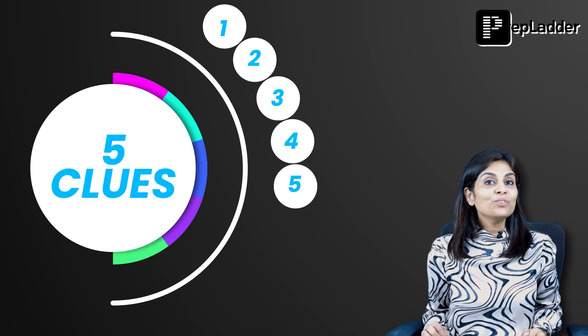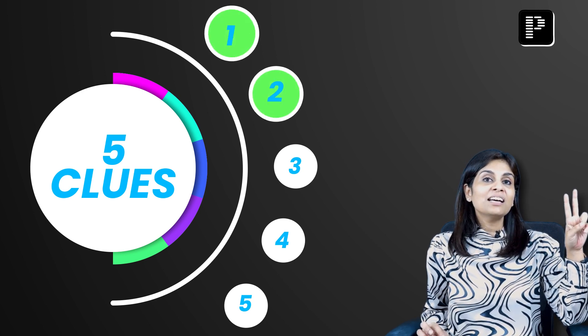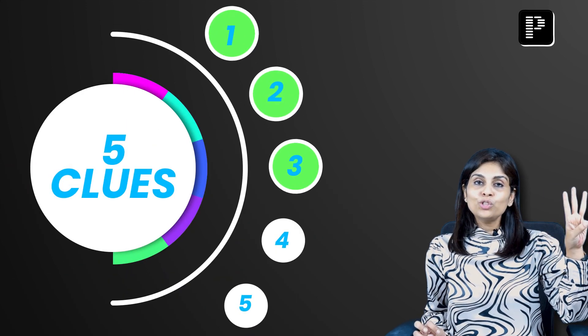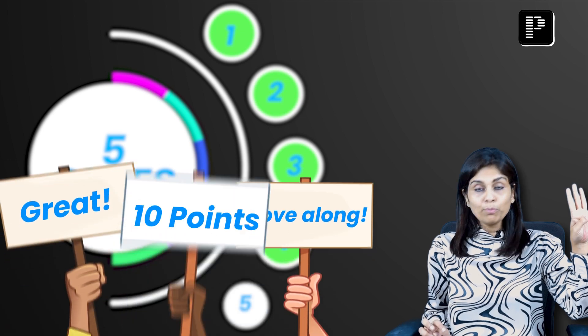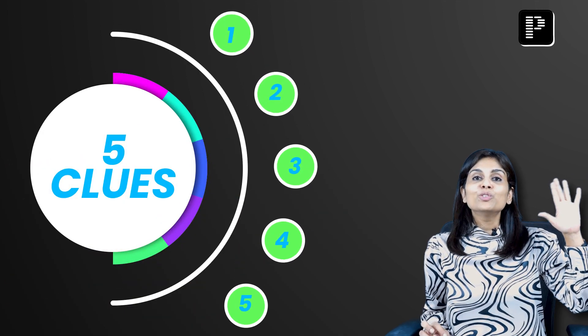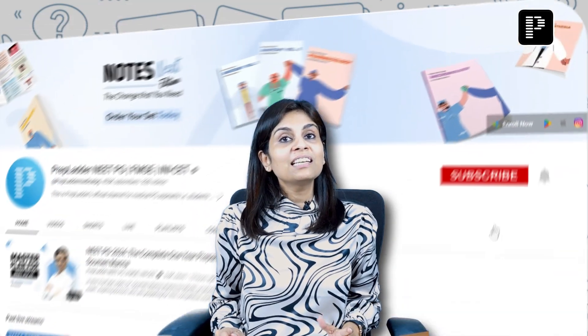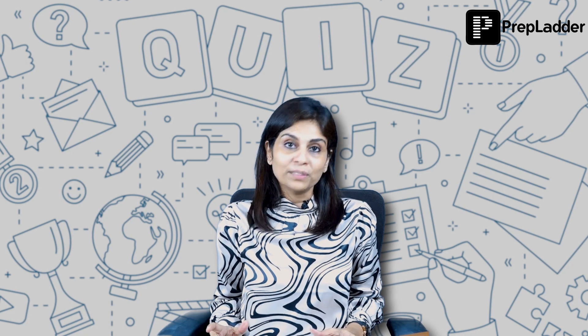All that you're expected to do is find out the right answer after clue number two is displayed. If your answer happens to be right, you get 20 points. If you need three clues to give the right answer, you get 15 points. Four clues, you get 10 points. Even if you use all five clues to find out the right answer, you still get five points. So do not forget to subscribe to this channel and click the bell icon to receive notifications whenever we upload these videos, because all these videos are based on frequently asked topics.